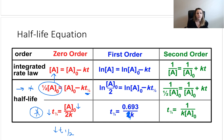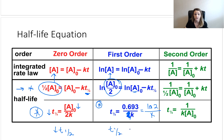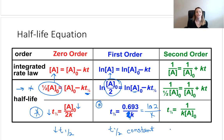Now let's look at first order. We take our initial concentration divided by 2 and substitute it in for our final concentration. After algebra, we get T½ equals the natural log of 2 divided by k — or 0.693 divided by k. Notice that concentration is not in this half-life expression at all, so our half-life here is constant. It's not going to change no matter what's happening with our reactant concentration.